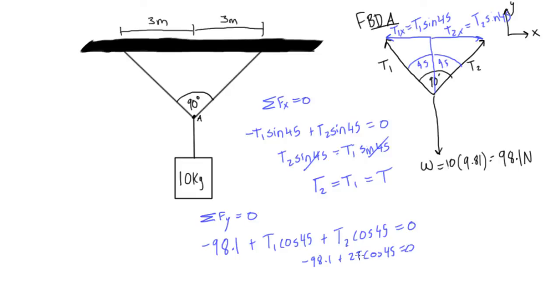And there we go, so now we just want to isolate for t, so we'll say that t is equal to 98.1 over 2 times cos of 45, so we will get that t is going to be equal to, type this in your calculator, you'll get 69 point, oh, there's a few decimal places, but we'll just write a few, 3672, 69.3672.